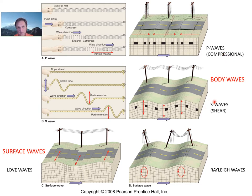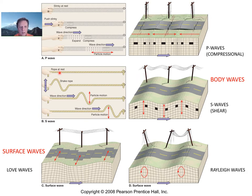P waves and S waves collectively are known as body waves because they occur fairly deep under the surface of the earth. After the P waves come the S waves — shear or secondary waves. The motion of a shear wave is like taking a rope, fixing it at one end, and moving it up and down: you'll see a traveling wave going through the rope. That's the motion of the soil or rock particles as the seismic wave passes through — a wavy up-and-down motion.